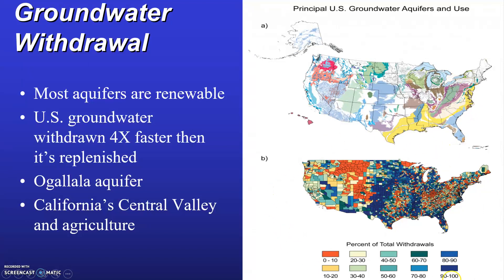This map depicts the percent of total withdrawals coming from aquifers — it's a ratio of groundwater withdrawals to total withdrawals from all surface and groundwater sources by county. The map illustrates that aquifers are the main and often exclusive water supply source for many US regions, especially the Great Plains, the Mississippi River area, East Central United States, the Great Lakes region, Florida, and other coastal areas. Any blue-shaded areas indicate that 70 to 100% of water withdrawal for that region is coming from the aquifers.